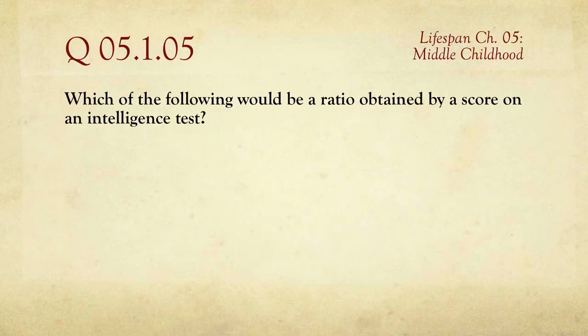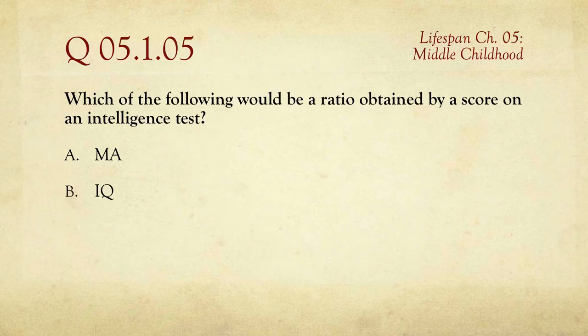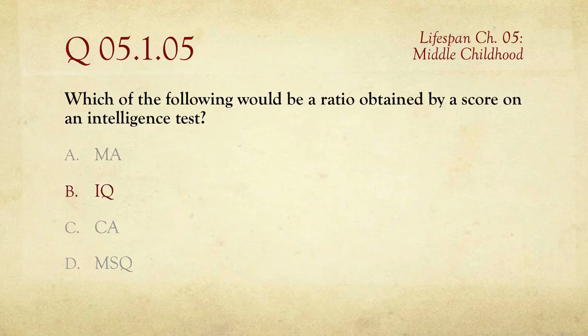The fifth question: which of the following would be a ratio obtained by a score on an intelligence test? So we're looking for a ratio. The choices are MA, IQ, CA, and MSQ — all very mysterious things. The one we're looking for is IQ, which has to do with intelligence quotient, or a ratio.